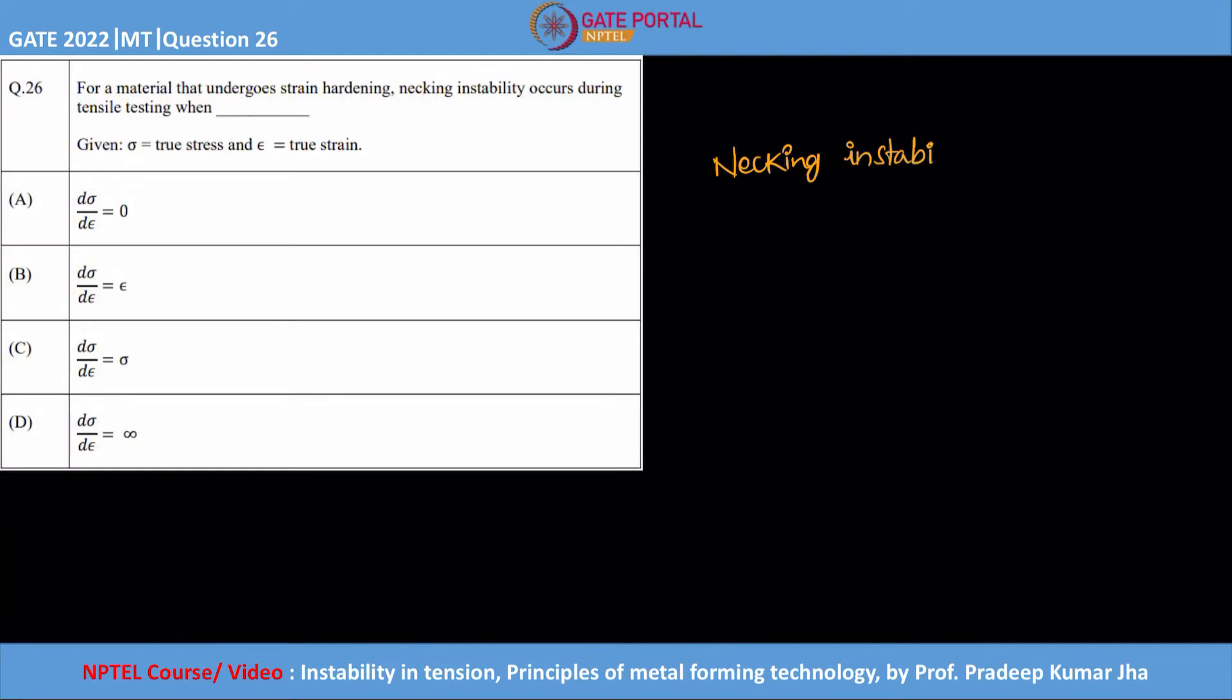Okay, so necking instability criteria is nothing but where we can say that necking is going to happen or necking is going to just start. And of course, from the stress-strain curve, if you remember, necking will start after UTS. Hence, this particular necking instability criteria will start satisfying from